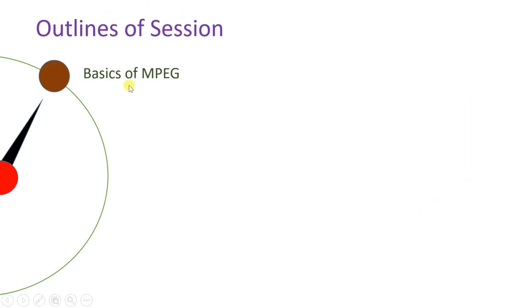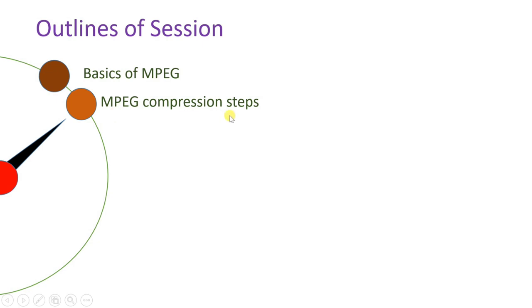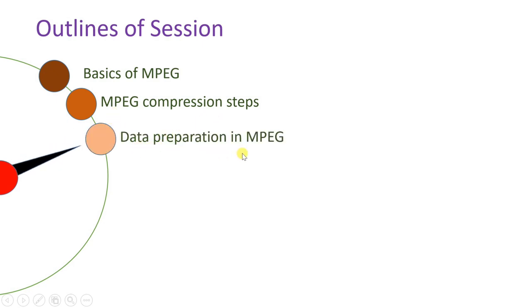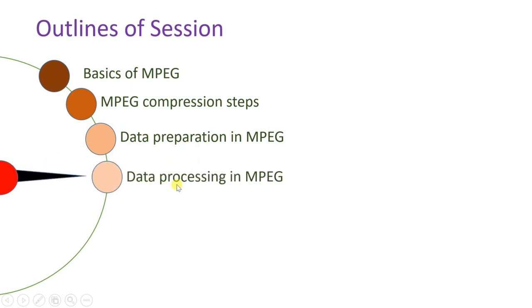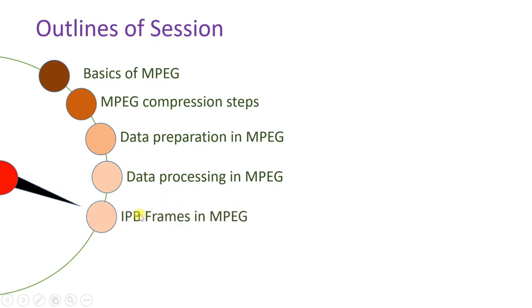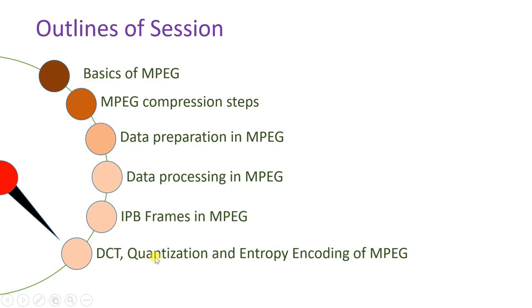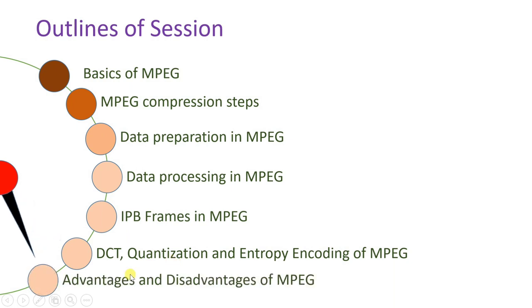First, I will explain basics of MPEG. Then I will explain MPEG compression steps, as we use the MPEG standard to reduce the size of video data. There are some standards for compression, and we will discuss all those steps. First, I will explain data preparation, then data processing, then frame structure by I, P, and B frames, then discrete cosine transform, quantization, and entropy coding. At the end, I will explain advantages and disadvantages of MPEG.